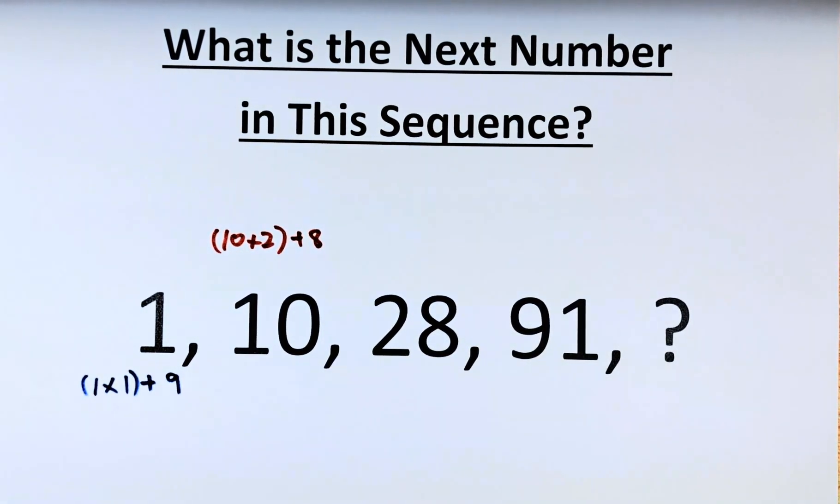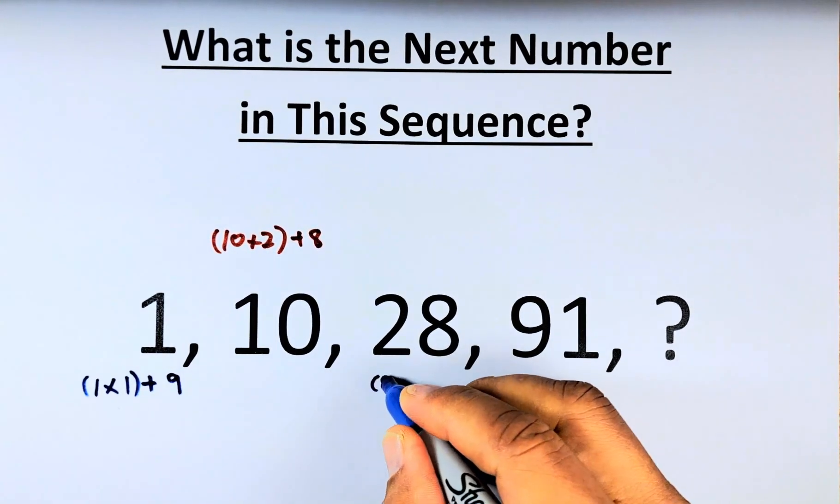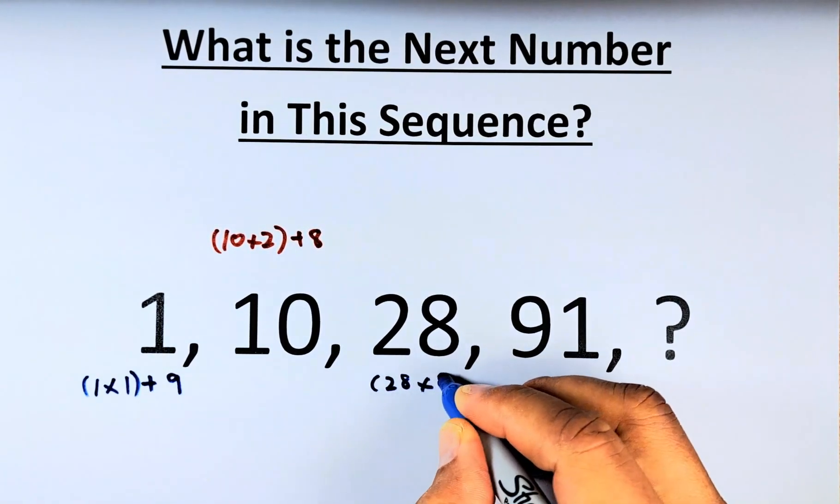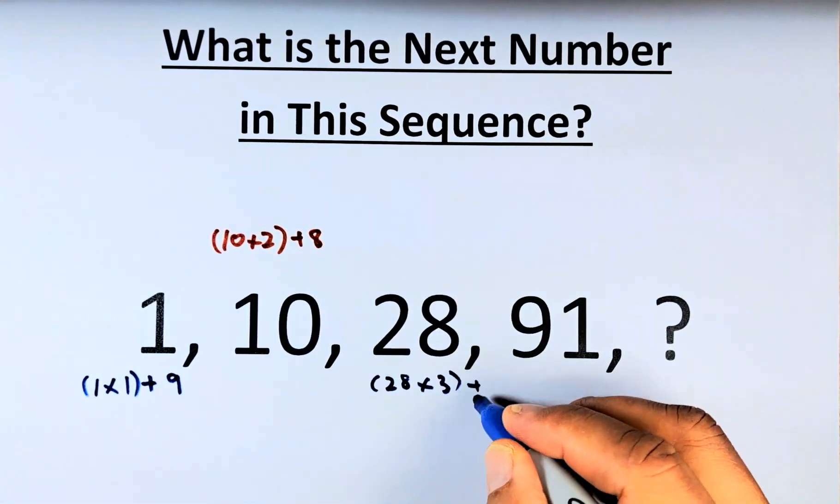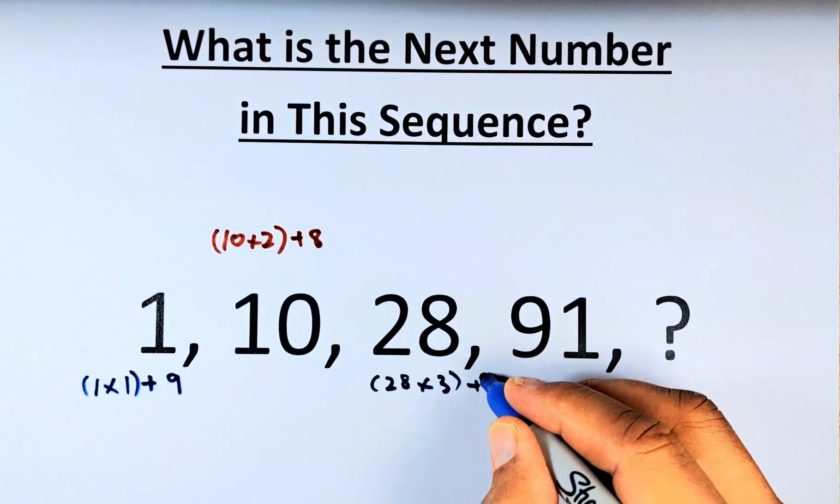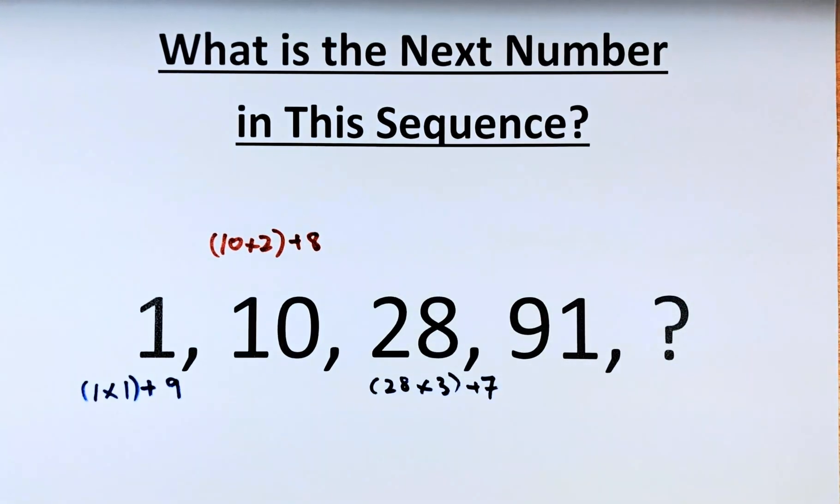So now you've got the hang of the number. So the next number is going to be 28 multiplied by 3, because it's 1 times 2, now it's times 3. And now the number 9, 8, and the next number, you're going to add 7. So 28 times 3 is going to be 84, and 84 plus 7 will give us 91.